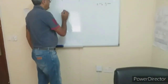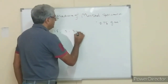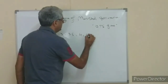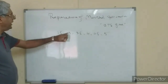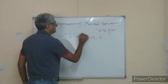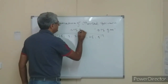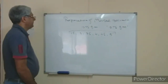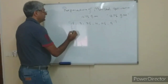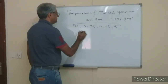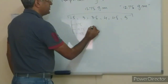The bitumen content will be varied: 2.5%, 3%, 3.5%, 4%, 4.5%, and 5%. Each of these will have the same aggregate weight of 1275 grams, and I will take three samples for each bitumen content level.